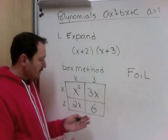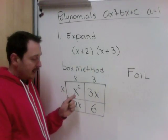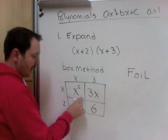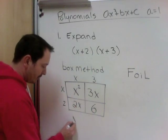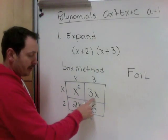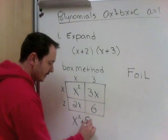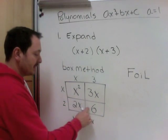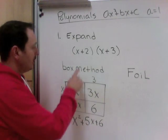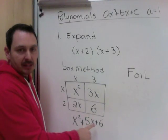And all we need to do is collect anything that's the same. So remember though, when we're collecting squares, x's are different than regular x's. So let's look at our squares first. We have one x squared. We have a few x's. We have a three x and a two x. So we have a total of five x's. And we have this number, six. So the expanded form of the binomial x plus two times x plus three is x squared plus five x plus six.